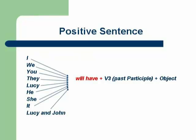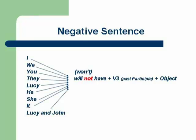How to make a positive sentence: whatever the subject is, put 'will have' after the subject, plus the third form of the verb (V3), also called past participle, plus object. For example: I will have eaten the cake. We will have made a report. You will have made a report. They will have written a novel. Lucy will have played tennis. He will have made a report. She will have written a letter. It will have grown very fast. Lucy and John will have made a report.